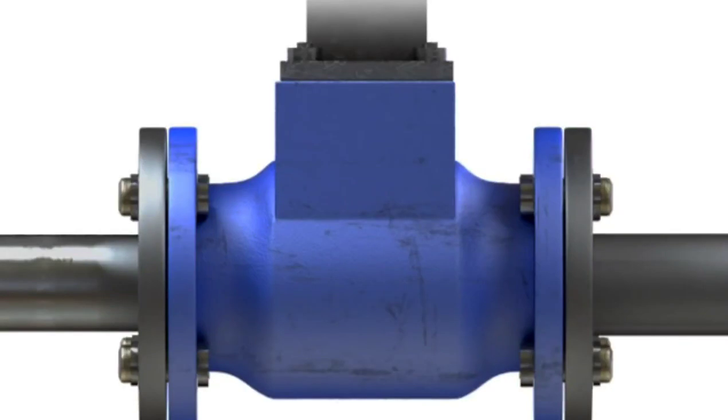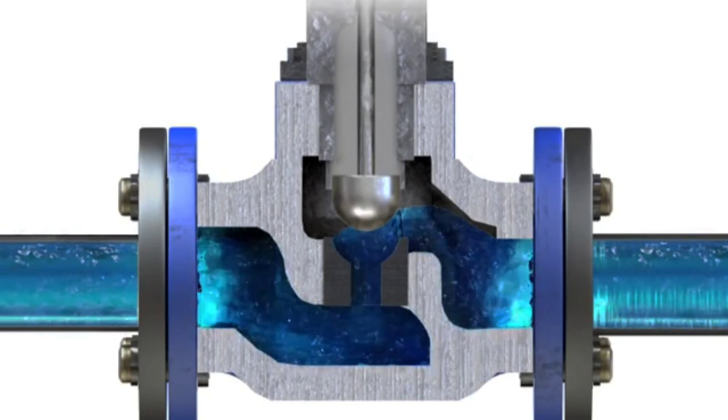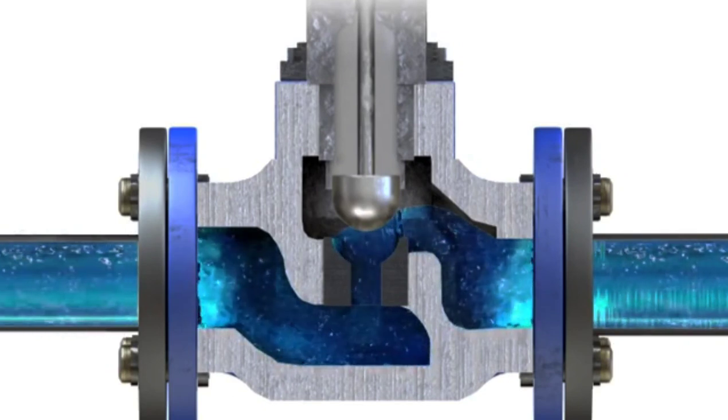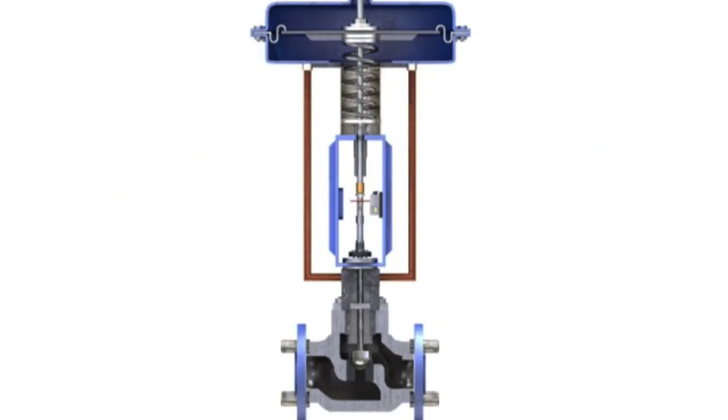Control valve actuators control fluid in a pipe by varying the orifice size through which the fluid flows. Control valves contain two major components: the valve body and the valve actuator.